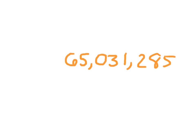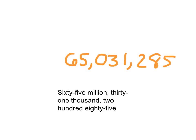I might ask you how many digits are in this number — there are 8 digits. Here I've written that out in word form. There are usually 3 digits in each of the periods, so you have to be careful. For instance, 31,000: you write a 0 in the 100,000s place because there are no 100,000s, then write 31. The 0 is a placeholder. Again, it's 65,031,285.